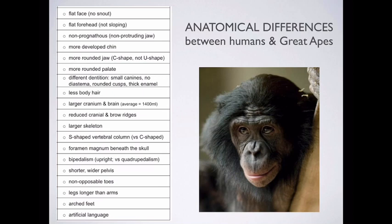When you look at our molars and premolars, our cusps are very flat in comparison, and our enamel is much, much thicker. When you talk about the great apes, they have large canines, they do have diastema, their cusps are more pointed than ours, and their enamel is thinner.